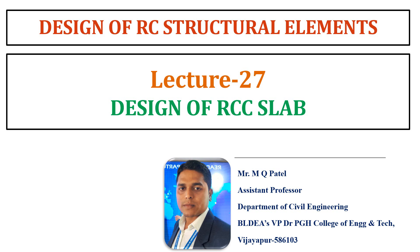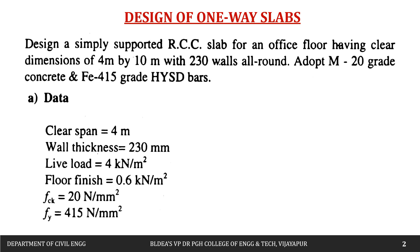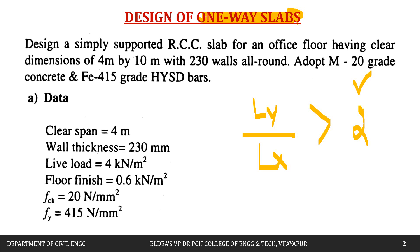In this video we are going to study the design of a one-way slab. In the previous video we saw what a one-way slab and a two-way slab mean. To revise: if the ly by lx ratio is greater than two — in other words, if the longer dimension is greater than two times the shorter dimension — then we call it a one-way slab.